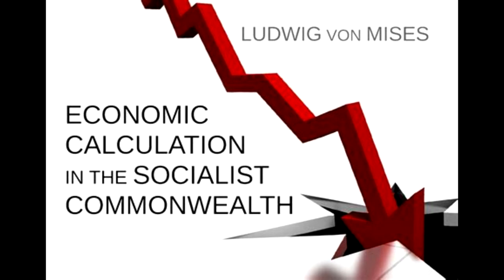As a consumer, he establishes a scale of valuation for goods ready for use and consumption. As a producer, he puts goods of a higher order into such use as produces the greatest return. In this way, all goods of a higher order receive a position in the scale of valuations in accordance with the immediate state of social conditions of production and of social needs. Through the interplay of these two processes of valuation, means will be afforded for governing both consumption and production by the economic principle throughout. Every graded system of pricing proceeds from the fact that men always and ever harmonize their own requirements with their estimation of economic facts.